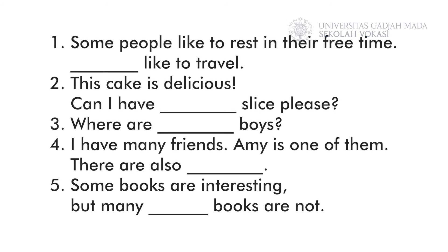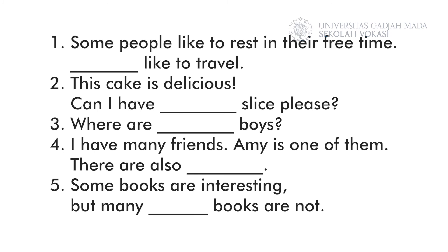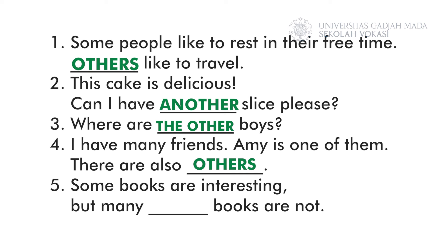Now let's combine our exercise from the materials we just discussed. Use either: another, other, others, the other, or the others. Pause the video for a few seconds. Let's see the correct answers. Number one: others. Number two: another. Number three: the other. Number four: others. Number five: other. Do you get them right? Awesome! Pretty easy, right?